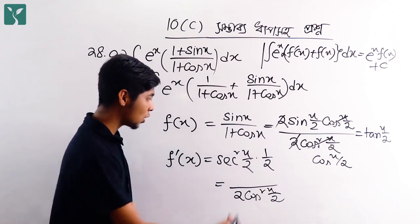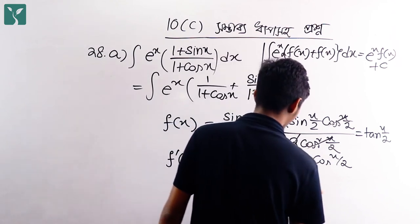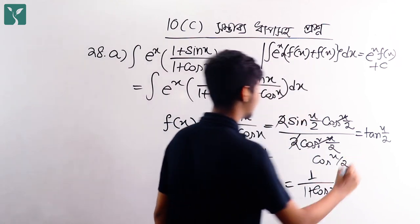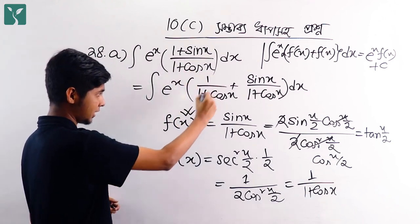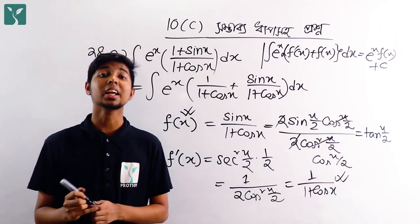Now what is the formula for 2 cos square x by 2? It's one plus cos x. So one by one plus cos x means if f of x is this, then f prime of x is this. Right!